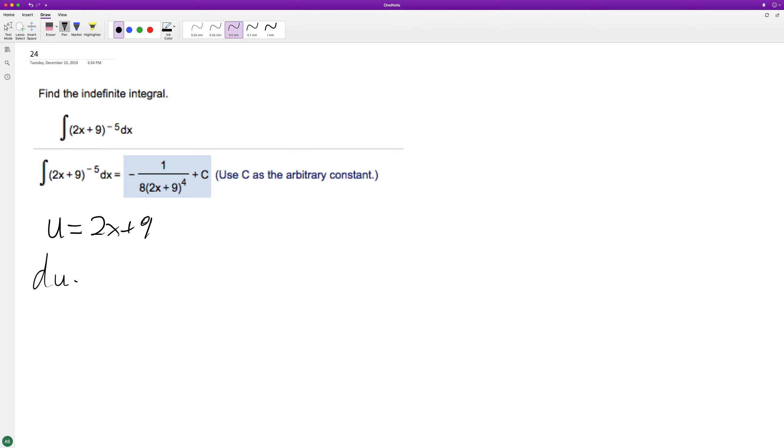And then du is equal to 2. So to get du equal to dx, so actually we can separate this into... Let's see here. So we need to multiply du by 1 half to get it equal to dx.